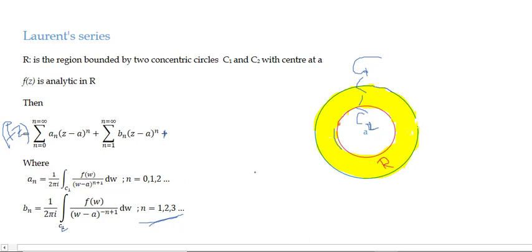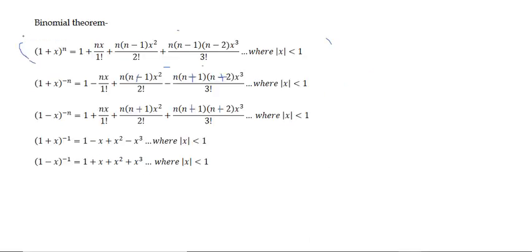Binomial expansion: (1+x)^n = 1 + nx/1! + n(n−1)x²/2! + n(n−1)(n−2)x³/3! + .... The important condition is that |x| must be less than 1 for this expansion to be valid.